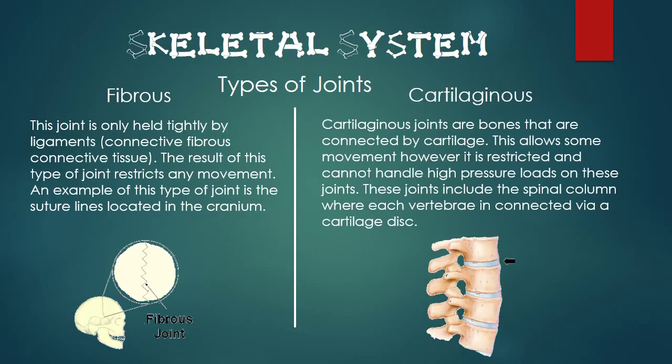Secondly, cartilaginous joints. Cartilaginous joints are bones that are connected by cartilage. This allows some movement, however it is restricted and cannot handle high pressure loads on these joints. These joints include the spinal cord, where each vertebra is connected via a cartilage disc.